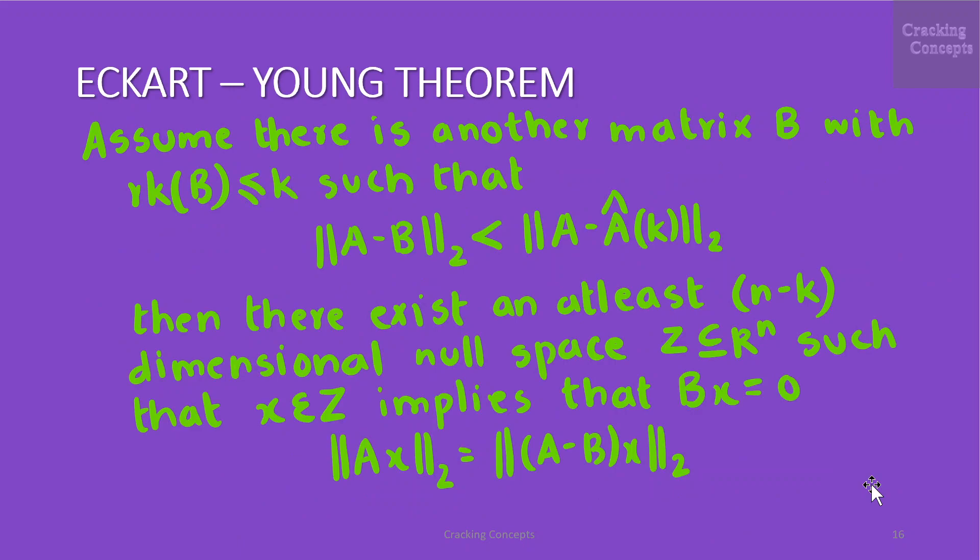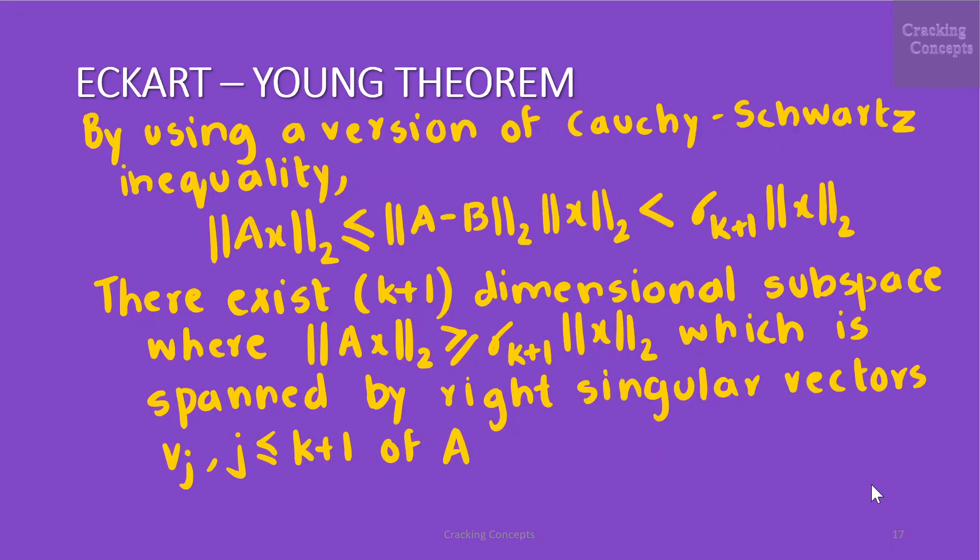Now if we assume that there is another matrix B with rank of B less than or equal to K such that Euclidean norm of A-B is less than Euclidean norm of A - Â_k, then there exists at least N-K dimensional null space which is Z which is a subset of the N dimension space such that x belongs to Z implies that Bx equal to 0. Then it follows that Euclidean norm of Ax is given by Euclidean norm of (A-B)x and by using a version of the Cauchy-Schwarz inequality that is based on norms of matrices we see that Euclidean norm of Ax is less than or equal to Euclidean norm of A-B times Euclidean norm of x which is less than σ_{k+1} times Euclidean norm of x.